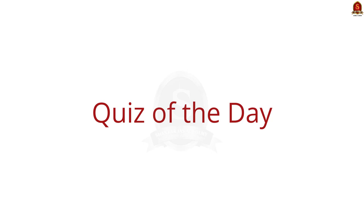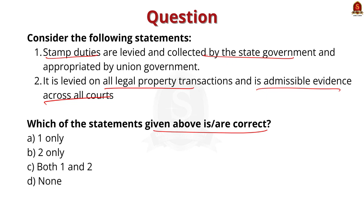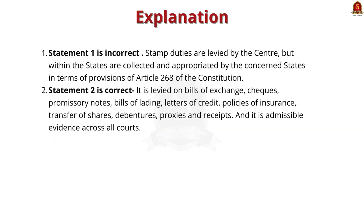Let's move on to our prelims practice questions. Consider the following statement: Stamp duties are levied and collected by the state government and appropriated by the union government. It is levied on all legal property transactions and it is admissible evidence across all courts. Which of the statements given above are correct? One only, two only, both one and two, or none. The correct answer is option B, two only. Statement one is wrong — stamp duties are levied by the center but are collected and appropriated by the concerned state according to the provisions of Article 268 of the Indian Constitution.